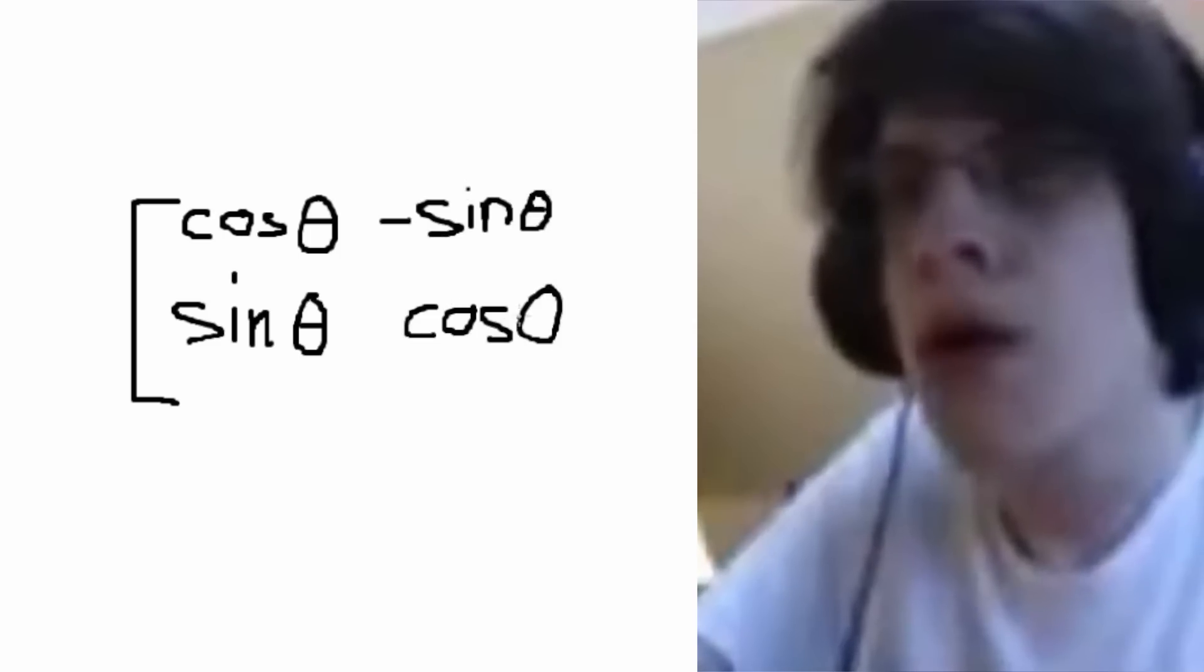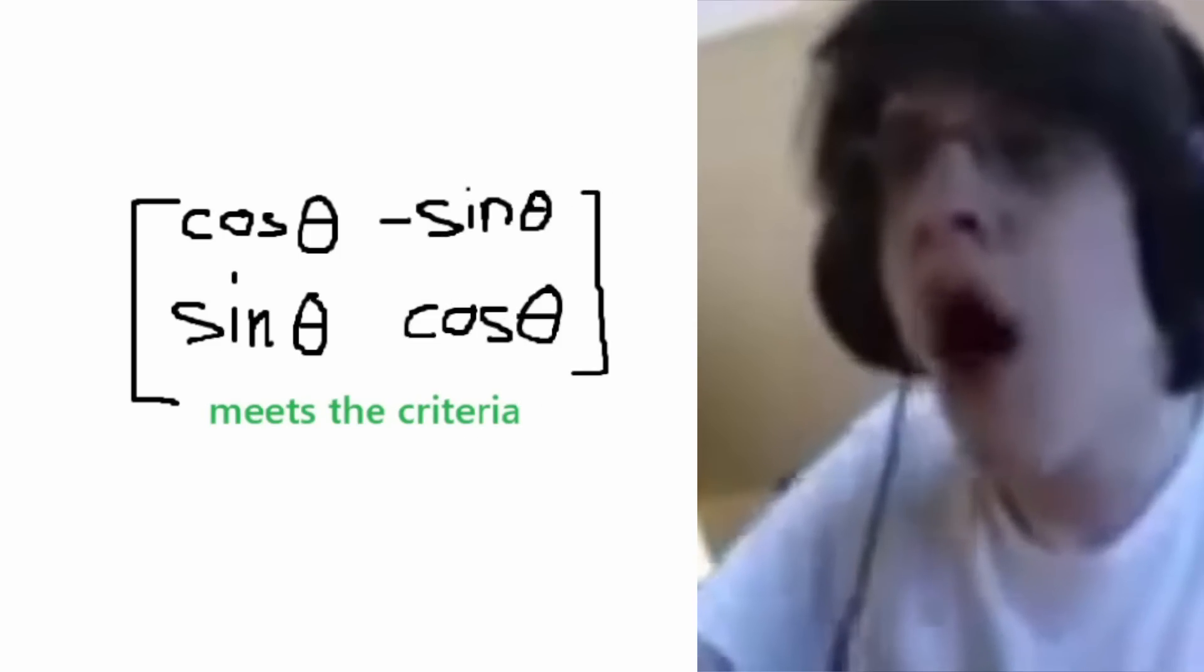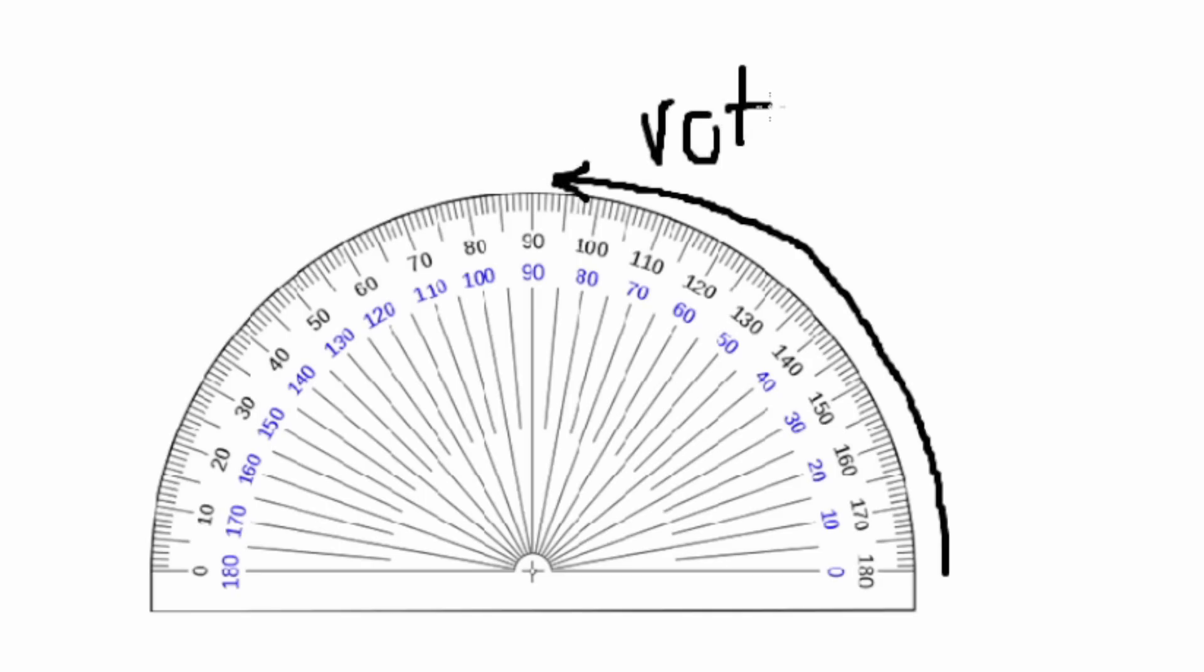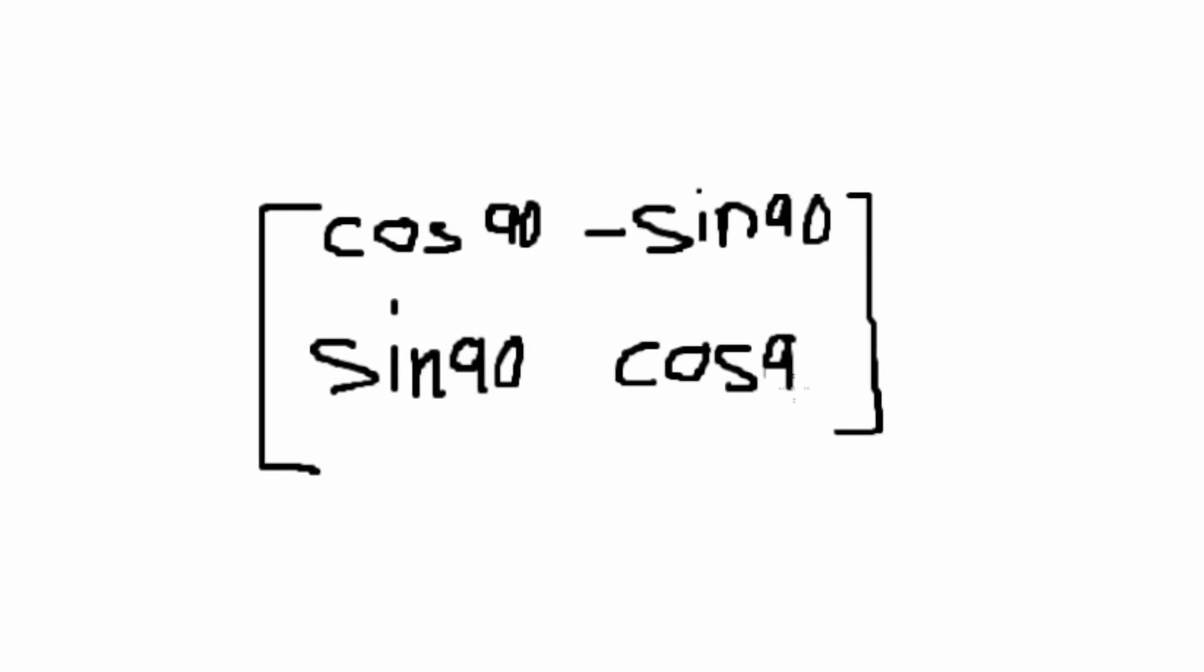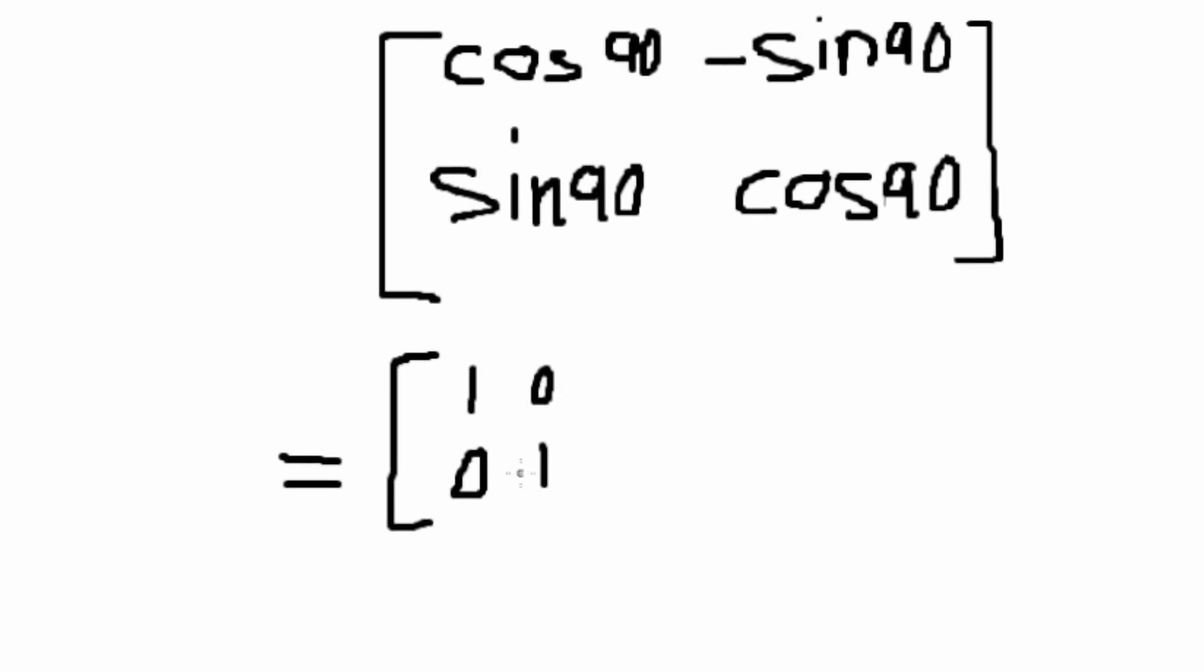Turns out, the Pythagorean identity meets the criteria exactly. As we want to rotate by 90 degrees, let's put 90 degrees in the matrix. If we evaluate these, then we just have 1, 0, 0, negative 1. Great.